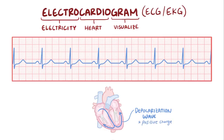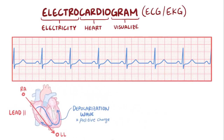The way it looks depends on the set of electrodes you're using. This particular set of electrodes is called lead 2, with one electrode on the right arm and the other on the left leg. So essentially when the wave is moving toward the left leg electrode, you get a positive deflection, like this big positive deflection corresponding to the wave moving down into the left and right ventricles.